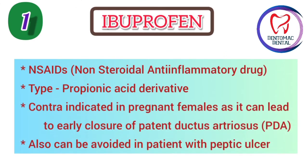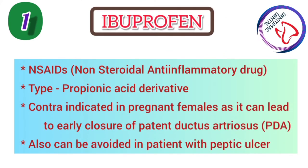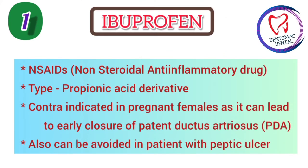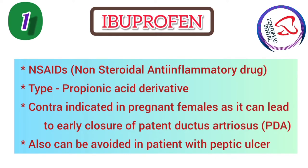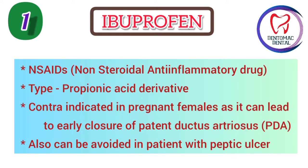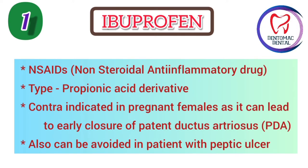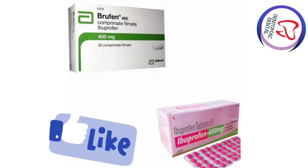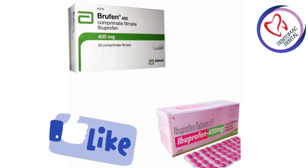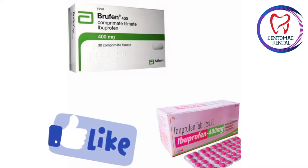Ibuprofen — non-steroidal anti-inflammatory drug; type is propionic acid derivative. Contraindicated in pregnant females as it can lead to early closure of patent ductus arteriosus (PDA). Also can be avoided in patients with peptic ulcer. Brufen 400 composition is Ibuprofen 400mg.